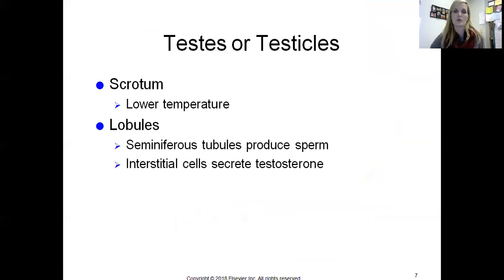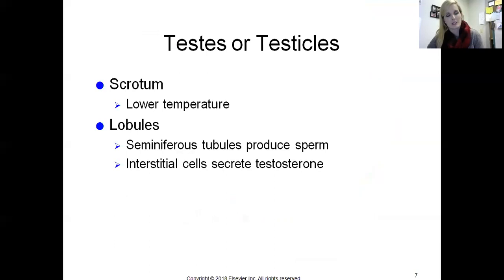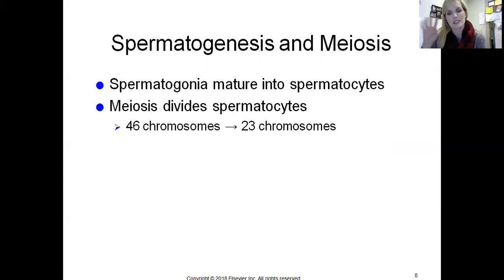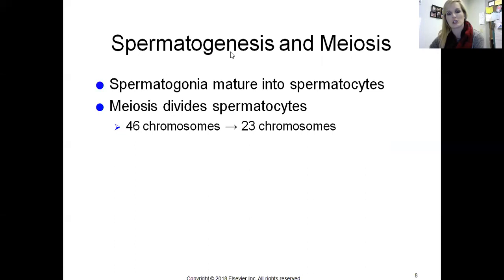The scrotum keeps the testes at a lower temperature because body temperature is too warm. Within the testes there are lobules containing two things: the seminiferous tubules — which produce sperm — and interstitial cells in between, which secrete testosterone. The process of sperm cell creation is called spermatogenesis — genesis meaning creation. So spermatogenesis is the creation of sperm cells.